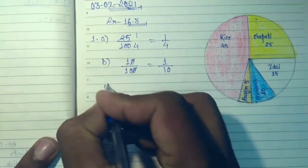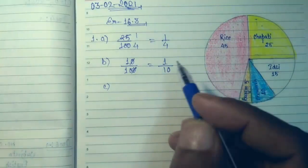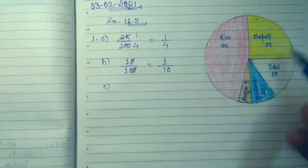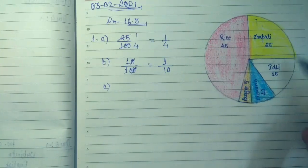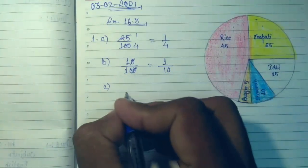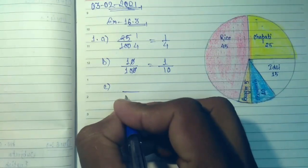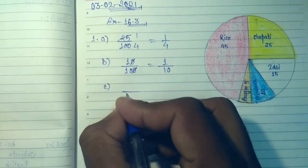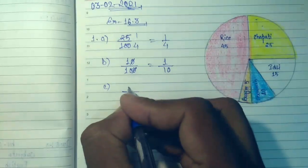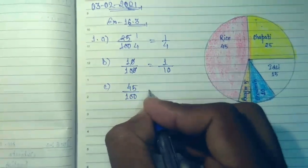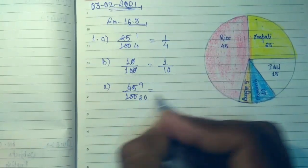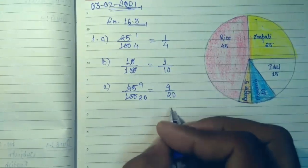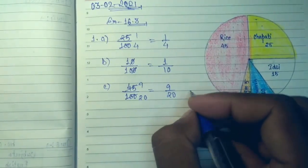Now question (c): What is the most liked food of the children? Among these, which food is selected by the greatest number of students? It is rice. Total is 100, out of 100, 45 like rice. 5 nines are 45 and 20 fives are 100, so the fraction is 9 upon 20. Therefore, the most liked food of the children is rice.